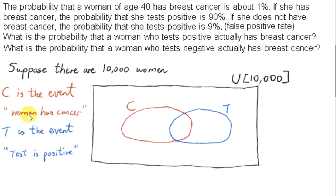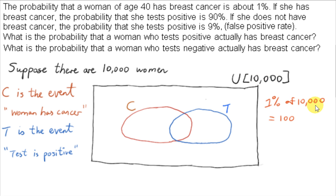Let C be the event that the woman selected has cancer. Let T be the event that the test result is positive. On average, about 1% of women aged 40 have breast cancer, so we want 1% of 10,000. That's 10,000 divided by 100, which is 100. So we have 100 elements inside set C.